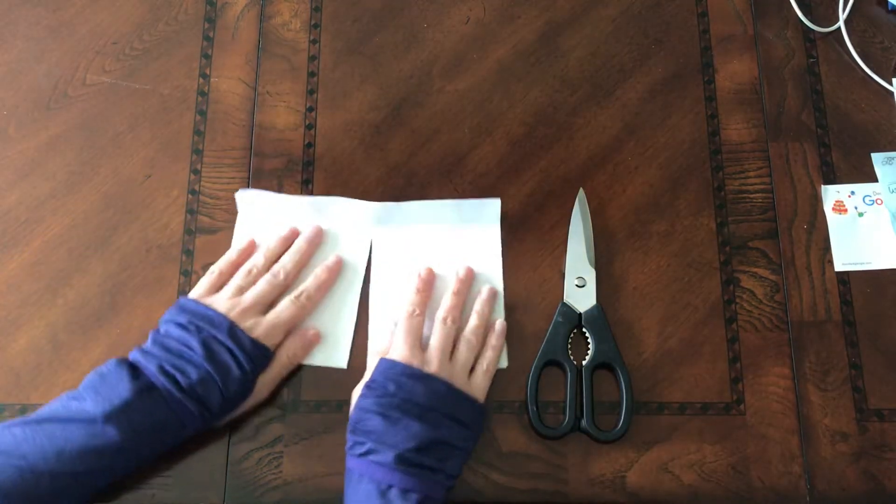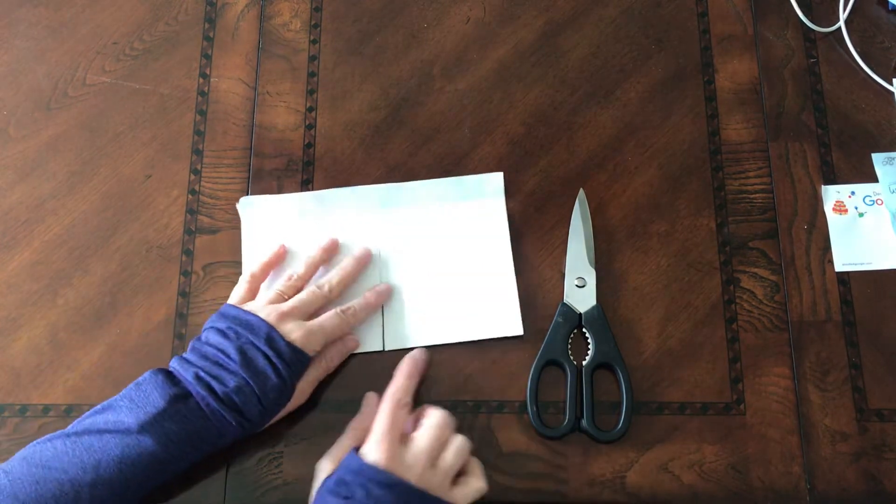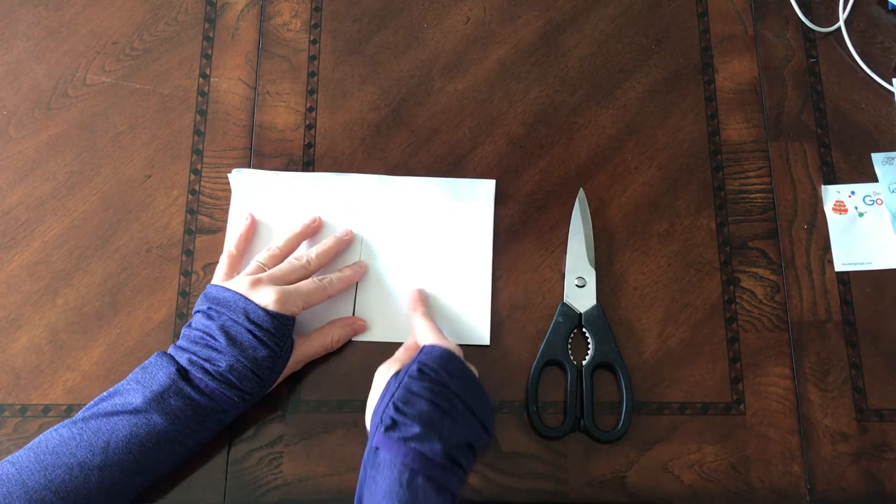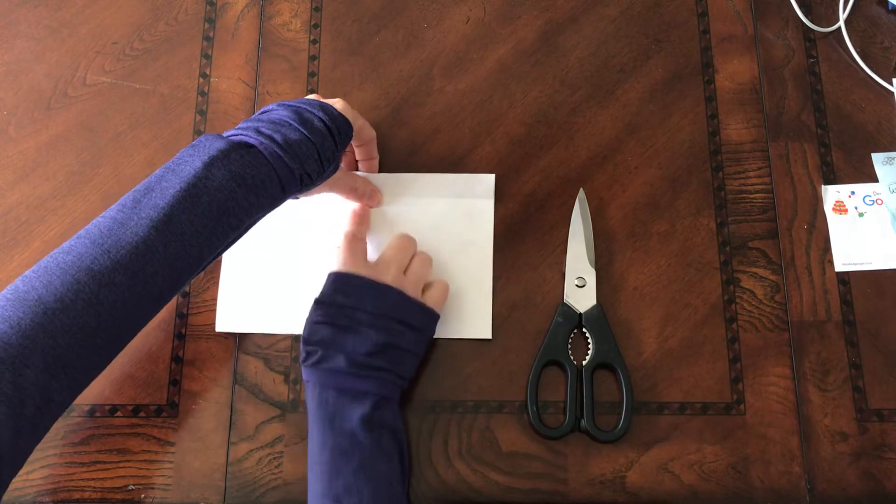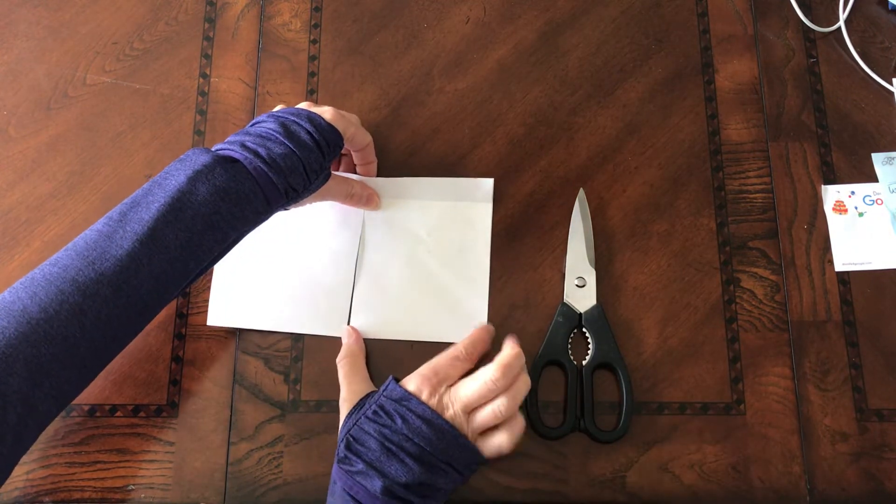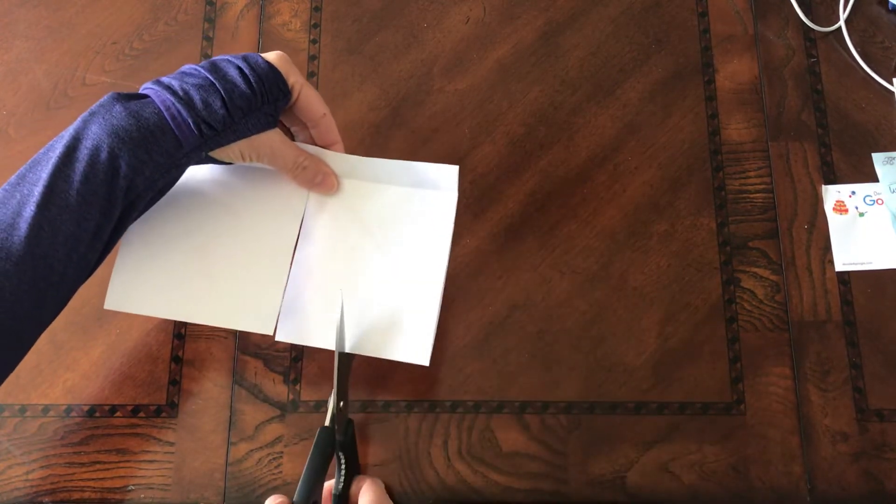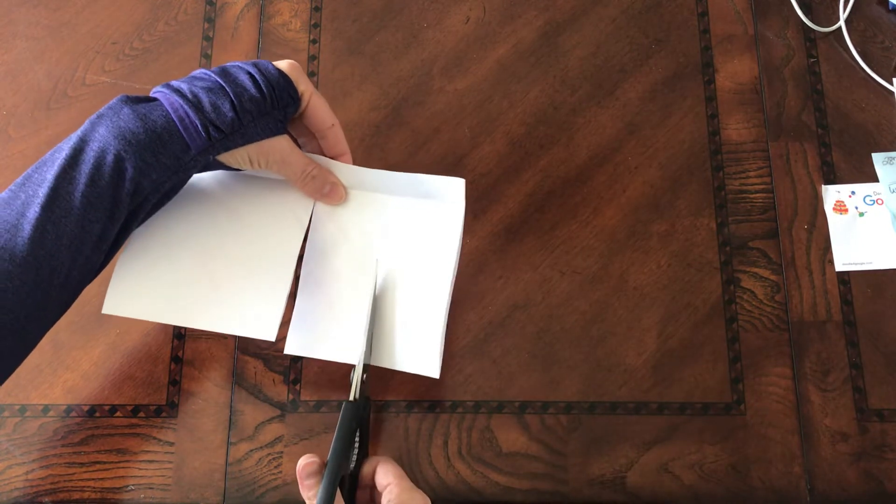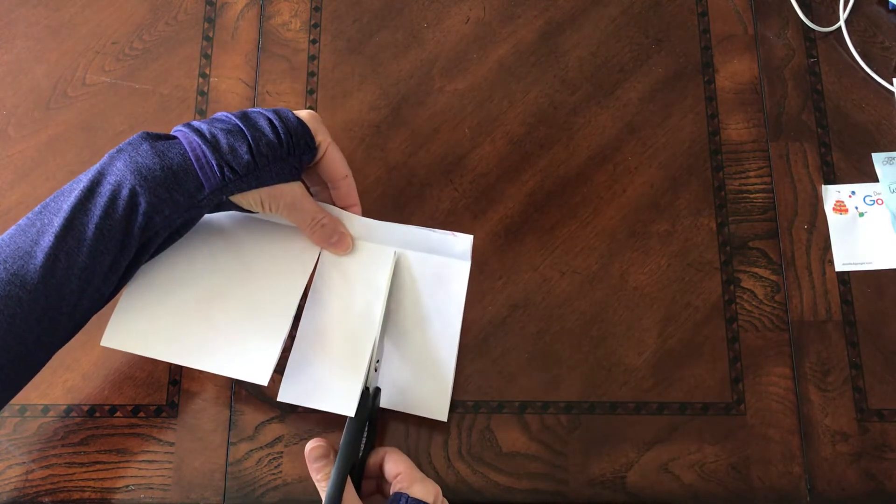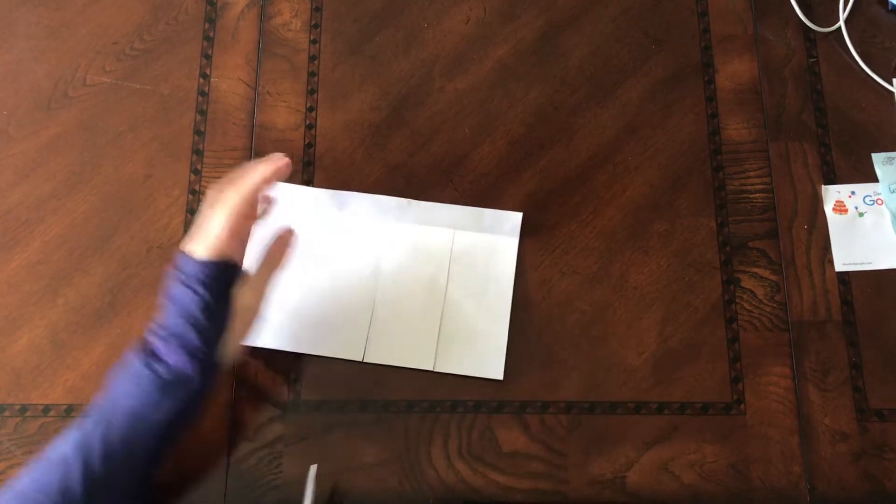I'm going to fold this back up again - there's my little pair of pants. Now I'm going to take my scissors and cut up the middle. I've cut this in half. Now I'm going to cut this side in half, and I'm going to do the same thing on the other side, cut that in half.